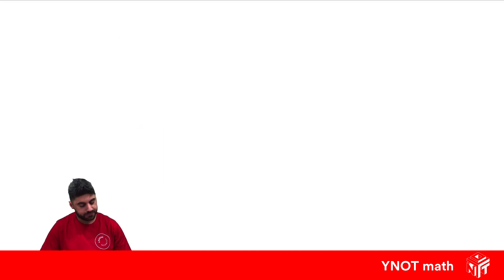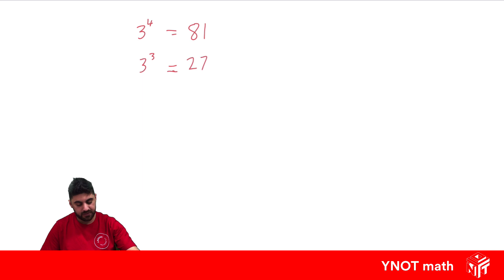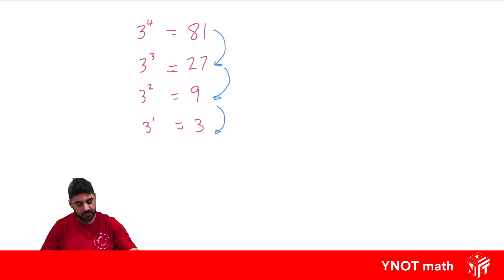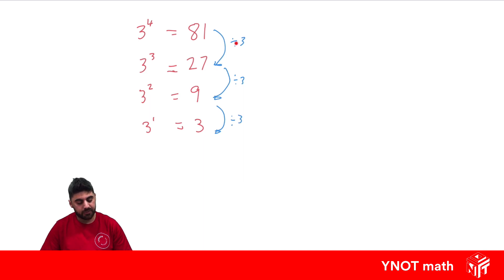Let's look at powers of 3: 3 to the power of 4 is 81, 3 to the power of 3 is 27, 3 squared is 9, and 3 to the power of 1 is 3. There's a clear pattern here — each time we go down one power, we divide by 3: 81 ÷ 3 = 27, 27 ÷ 3 = 9, and 9 ÷ 3 = 3.